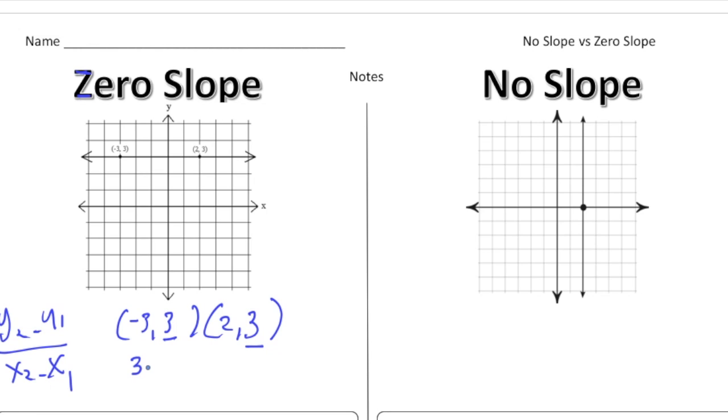So 3 take away 3 over 2 minus negative 3. And that ends up with zero in the numerator and 5 in the denominator. And this right here, I'm going to put a star next to it. This right here, having a zero in the numerator, is a sign that it's going to be zero slope.